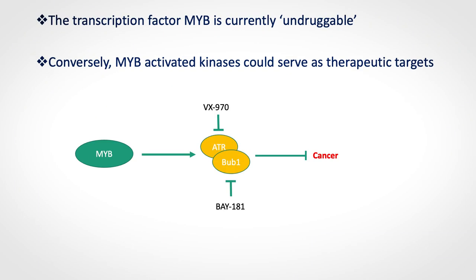The easy answer would be to block MIB or MIB-NFIB using a drug to restore programmed cell death and cure the cancer. Unfortunately this is not possible because MIB is currently undruggable — there are no validated small molecule inhibitors in the clinic. However, there are kinases downstream of MIB, such as ATR and BAB1, for which drugs have already been developed and are in clinical use.